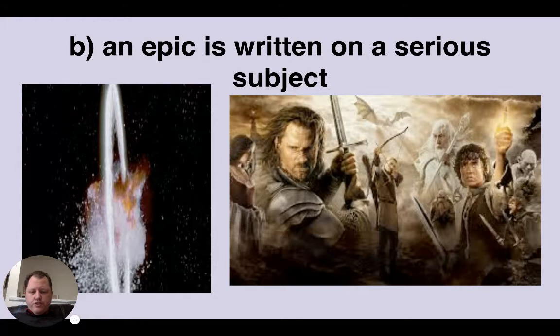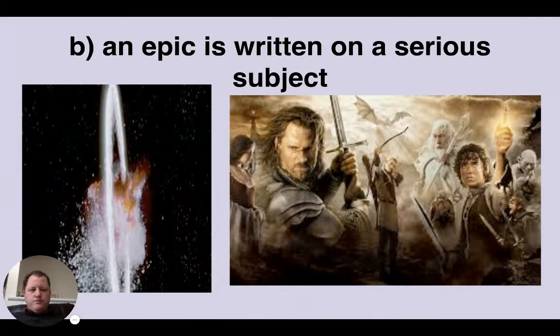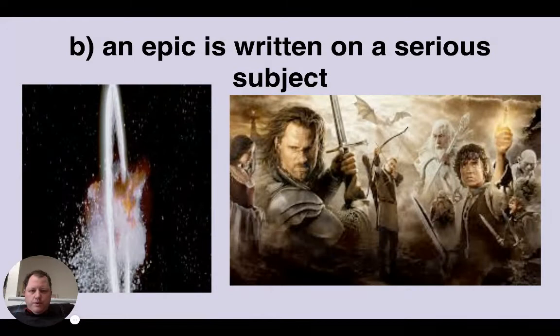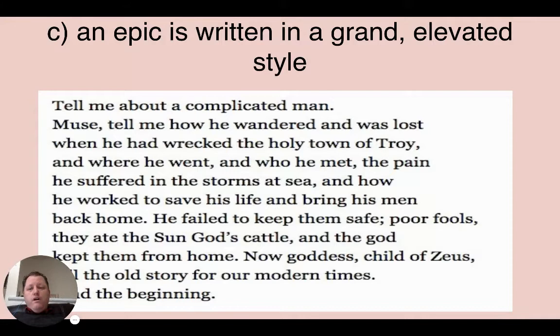Second, an epic is written on a serious subject. 'Serious' usually means the stakes are extremely high. In Star Wars A New Hope, and in Lord of the Rings: Fellowship of the Ring, what's at stake is actually the entire universe they're in — the galaxy is at stake with what Luke Skywalker's up to, and all of Middle Earth is at stake with what the Baggins' adventure is about. So 'serious subject' really means apocalyptic, super high, worldwide stakes.